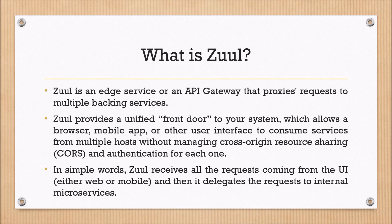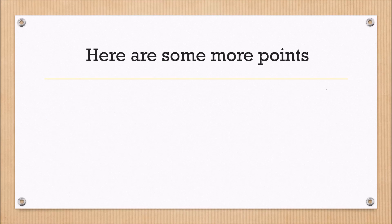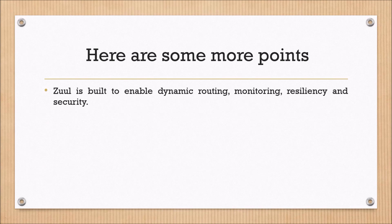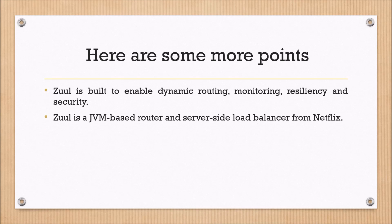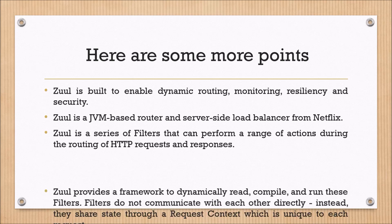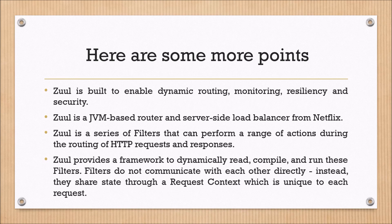In simple words, Zuul receives all the requests coming from the UI, either web or mobile, and then it delegates the requests to internal microservices. Zuul is built to enable dynamic routing, monitoring, resiliency, and security. Zuul is a JVM-based router and server-side load balancer from Netflix. It is a series of filters that can perform a range of actions during the routing of HTTP requests and responses. Zuul provides a framework to dynamically read, compile, and run these filters. Filters do not communicate with each other directly; instead they share state through a request context which is unique to each request.